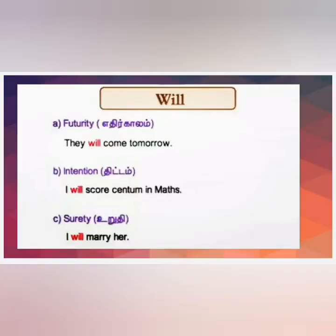Will represents futurity, intention, and surety. For futurity: 'They will come tomorrow' — 'will' stresses the future. For intention: 'I will score maximum marks' and 'I will marry her.' For surety, 'will' expresses certainty. Will is also used to show willingness — for example, 'I will take this suitcase for you' — expressing that someone is willing to do something.